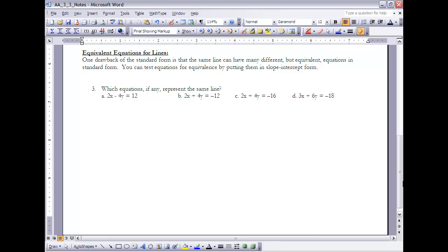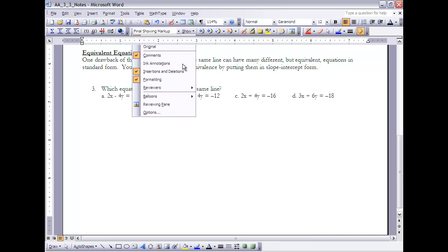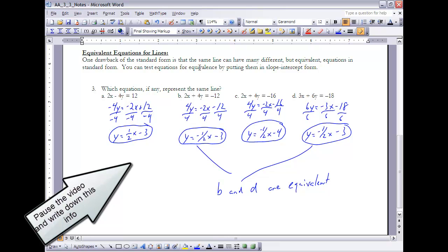Let's take a look here at example number 3. It says which equation, if any, represents the same line? We have 2x minus 4y equals 12, 2x plus 4y equals negative 12. They're all similar looking. To do that, what I'm going to do is I'm going to put each one of those into slope intercept form. And then once they're in slope intercept form, if they're the same, their slope intercept form will be exactly the same. Here's each of those in slope intercept form. I'm solving for y, putting that x term first. And you can kind of see what I did for each of those. Make sure you get down the work on these as well.